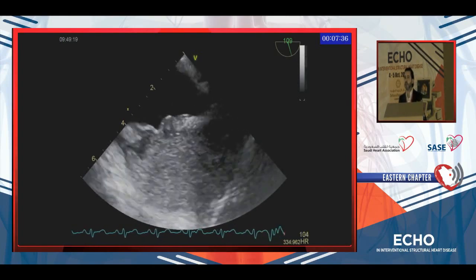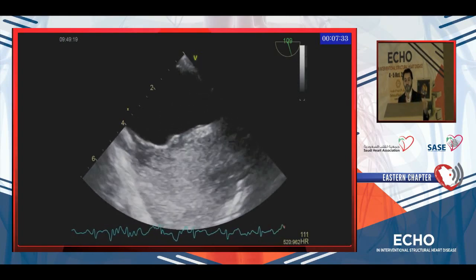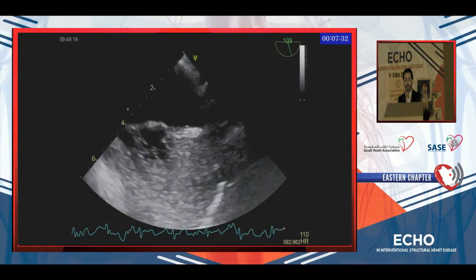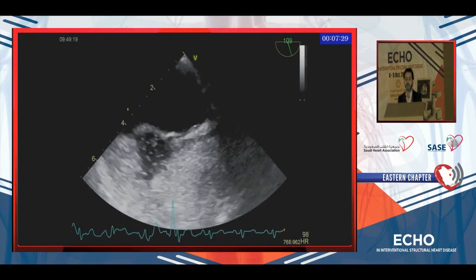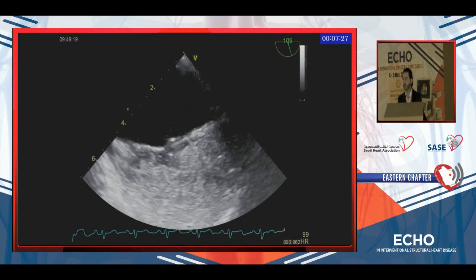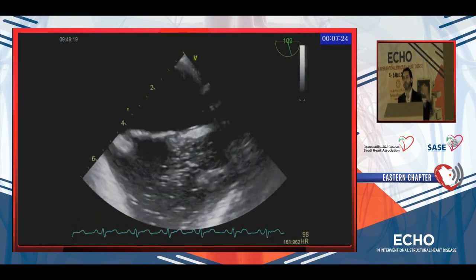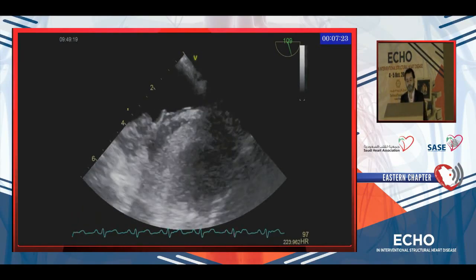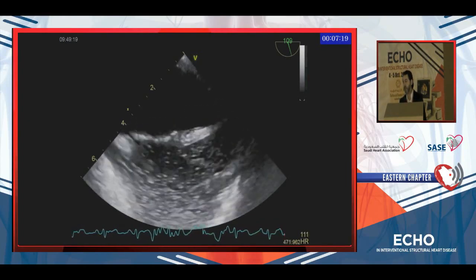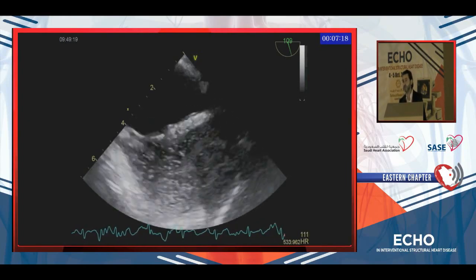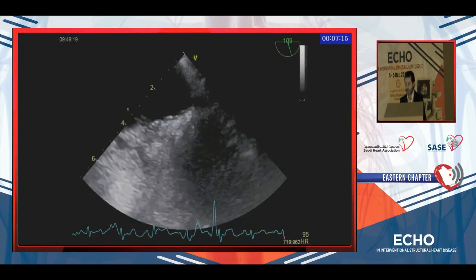Sometimes you have to really try to perform good maneuvers to see the septal shift to the left side. Look carefully — once we raise the arm and leg and do abdominal compression, you will see the leftward shift of the septum caused by increased RA pressure. If you cannot perform this, your report might be inaccurate.